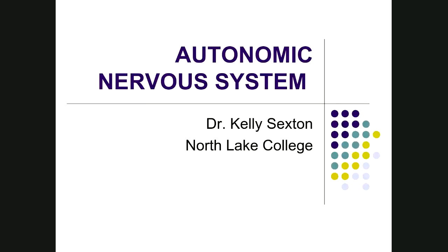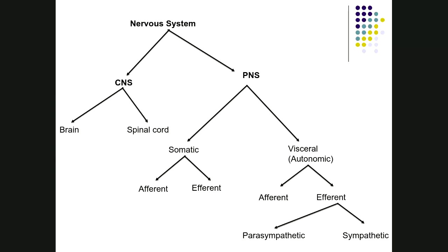This video covers the autonomic nervous system. The nervous system is divided into the central nervous system — the brain and spinal cord — and the peripheral nervous system, which includes everything else such as nerves and ganglia. Nerves are divided based on where they go: somatic nerves go to or from body walls, while visceral or autonomic nerves go to or from internal organs.